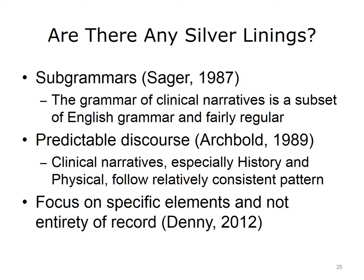Are there any silver linings that may enable hope for clinical NLP? It turns out there are. First is the notion of subgrammars after work by Sager — grammars specific to disciplines. She determined there was a subgrammar of clinical narratives that was fairly regular and predictable. Another finding is that medical charts tend to have a predictable discourse, especially documents like the history and physical, which follows a well-prescribed pathway. More recently, another silver lining is that we should abandon processing the entire clinical narrative and instead focus on specific elements that indicate whether a specific disease or clinical finding is present.